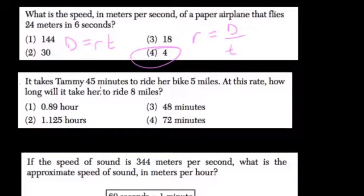It takes Tammy 45 minutes to ride her bike 5 miles. At this rate, how long will it take her to ride 8 miles? Here, I'll just use a proportion. 45 for every 5, right? How many minutes for 8? Solve for x.